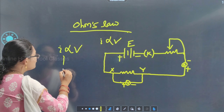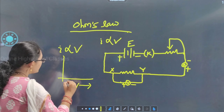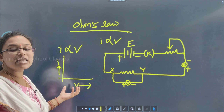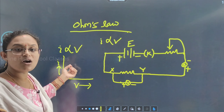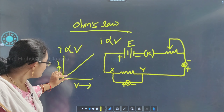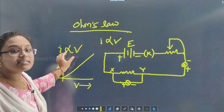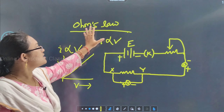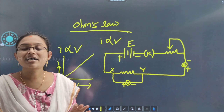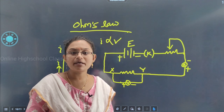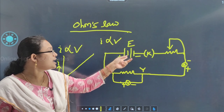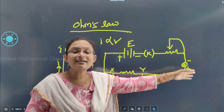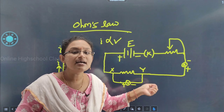If we plot a graph between I and V — V along the x-axis and I along the y-axis — we obtain a straight line. If we obtain a straight line, then Ohm's law is verified. We consider a conductor connected to a battery with the help of K and a rheostat, with an ammeter and voltmeter connected.